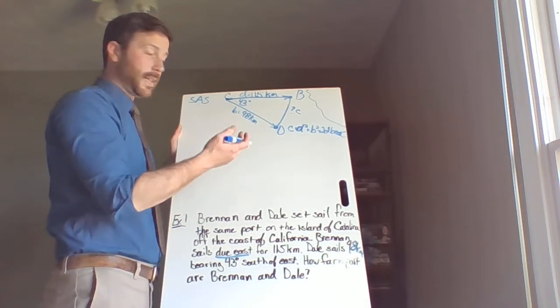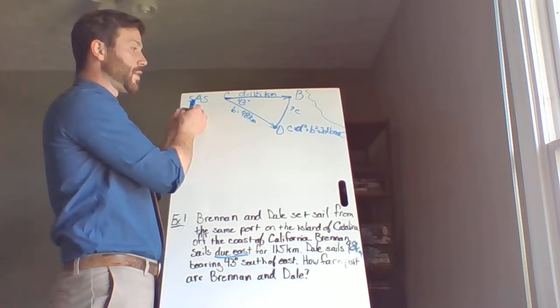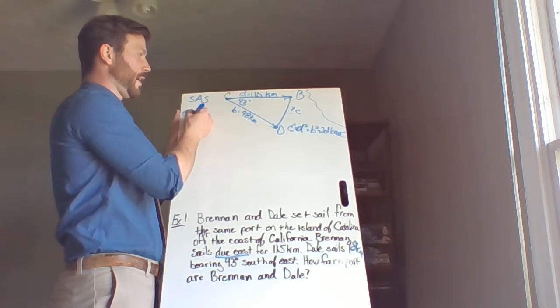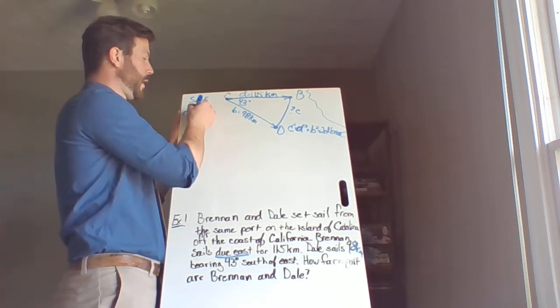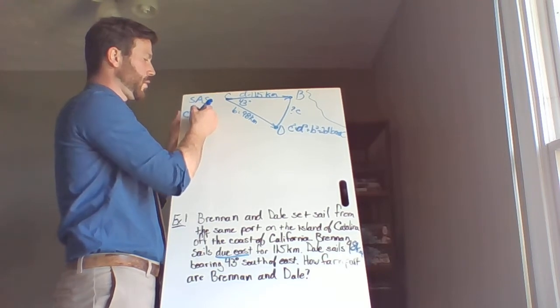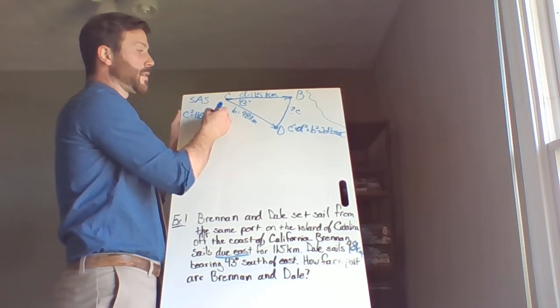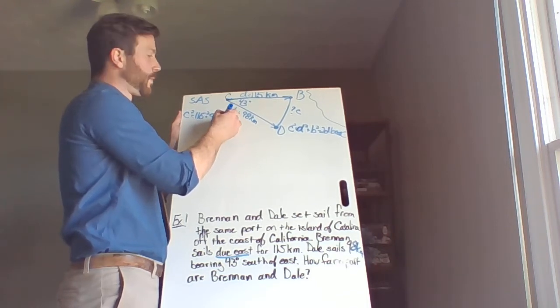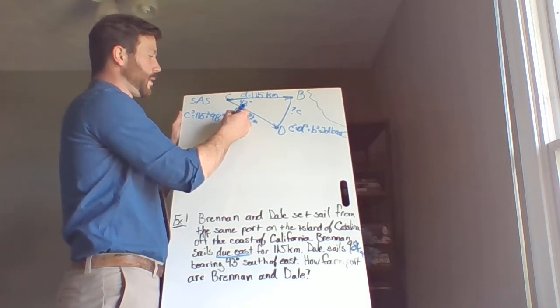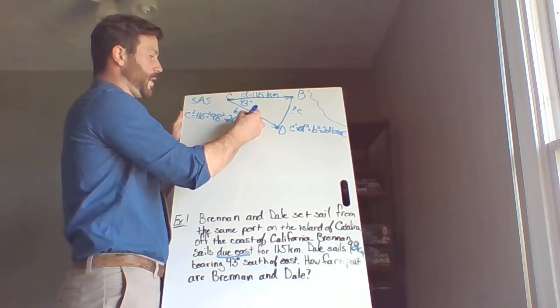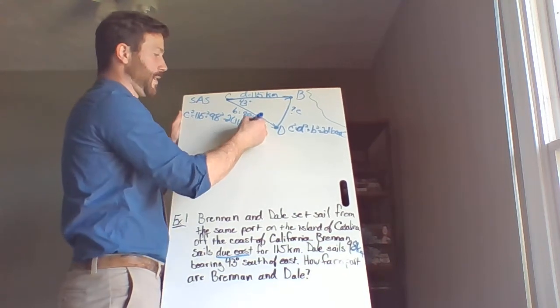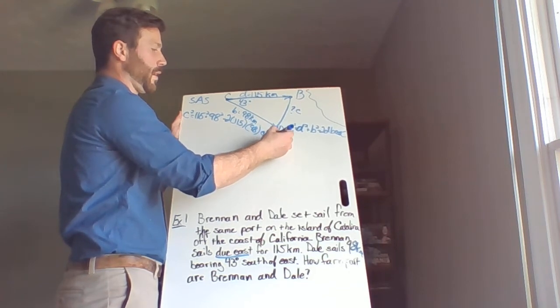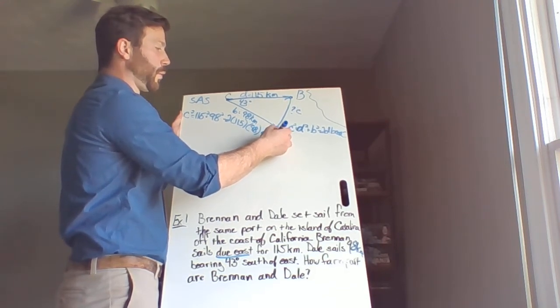Well, we have all those values. So let's take them and plug them in. So that's c squared equals 115 squared plus 98 squared minus 2 times 115, sorry, my brain is going to get a little slanty here.